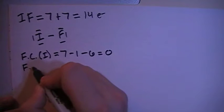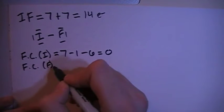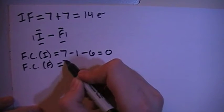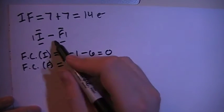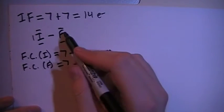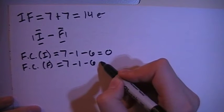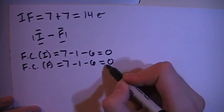And then the formal charge on the fluorine is going to be very similar: the 7 valence electrons brought in minus the 1 single bond minus the 2, 4, 6 non-bonding electrons for also a formal charge of 0.